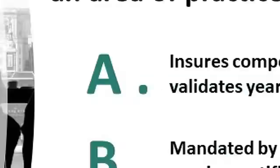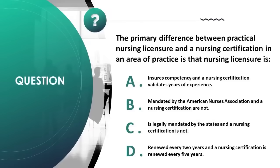The primary difference between practical nursing licensure and nursing certification in an area of practice is: A) licensure ensures competency and certification validates years of experience, B) mandated by the American Nurses Association and certification is not, C) legally mandated by the states and certification is not, D) renewed every two years and certification renewed every five years. Correct answer is C.